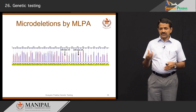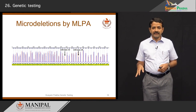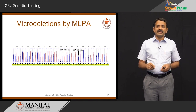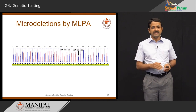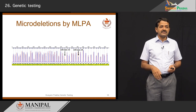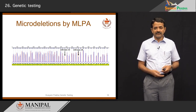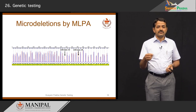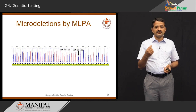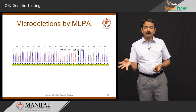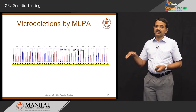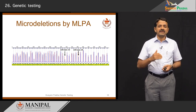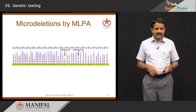Micro-deletions or small chromosomal rearrangements can also be detected by MLPA — multiplex ligation-dependent probe amplification. As an example, a set of microdeletion syndromes including Prader-Willi syndrome, Angelman syndrome, Williams syndrome, and DiGeorge syndrome are combined in one kit. We can analyze 30 to 40 regions in one go. A heterozygous deletion in the elastin gene can be seen, confirming the diagnosis of Williams syndrome.